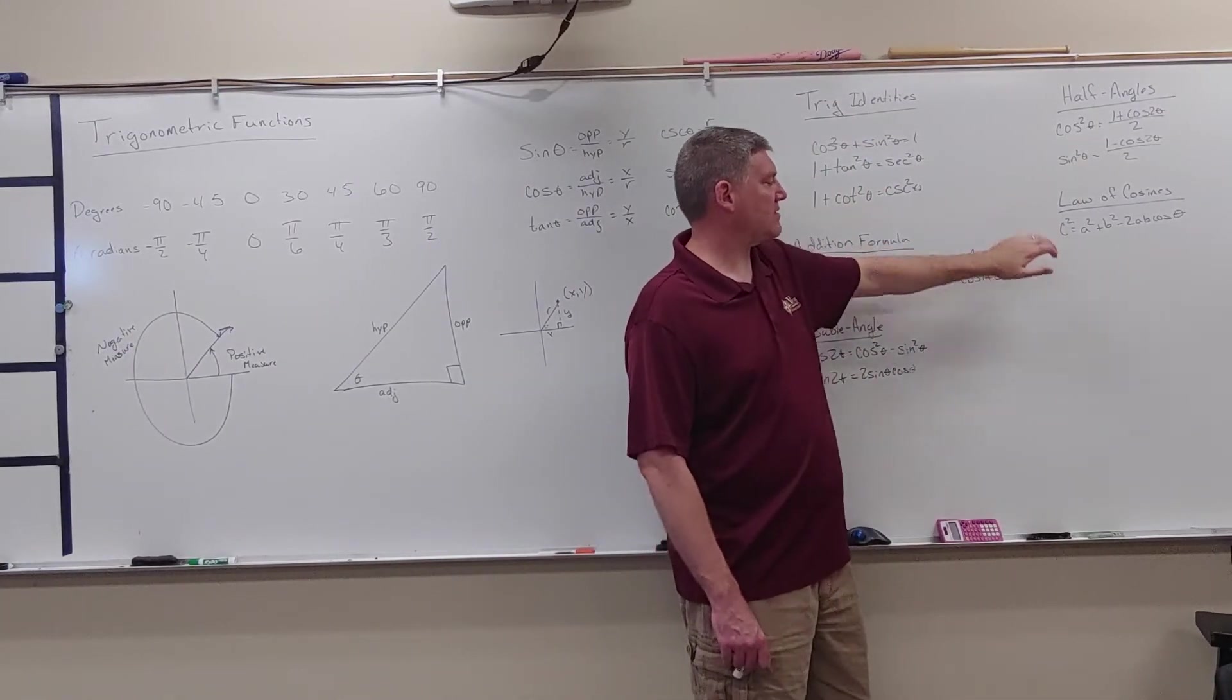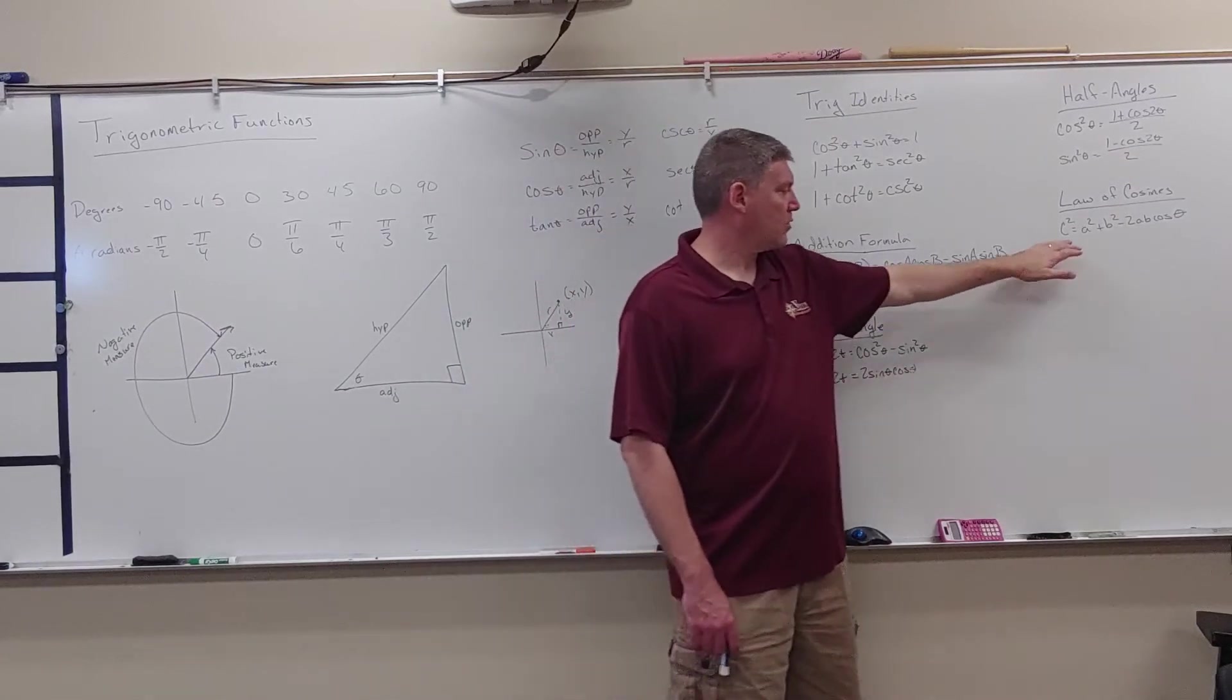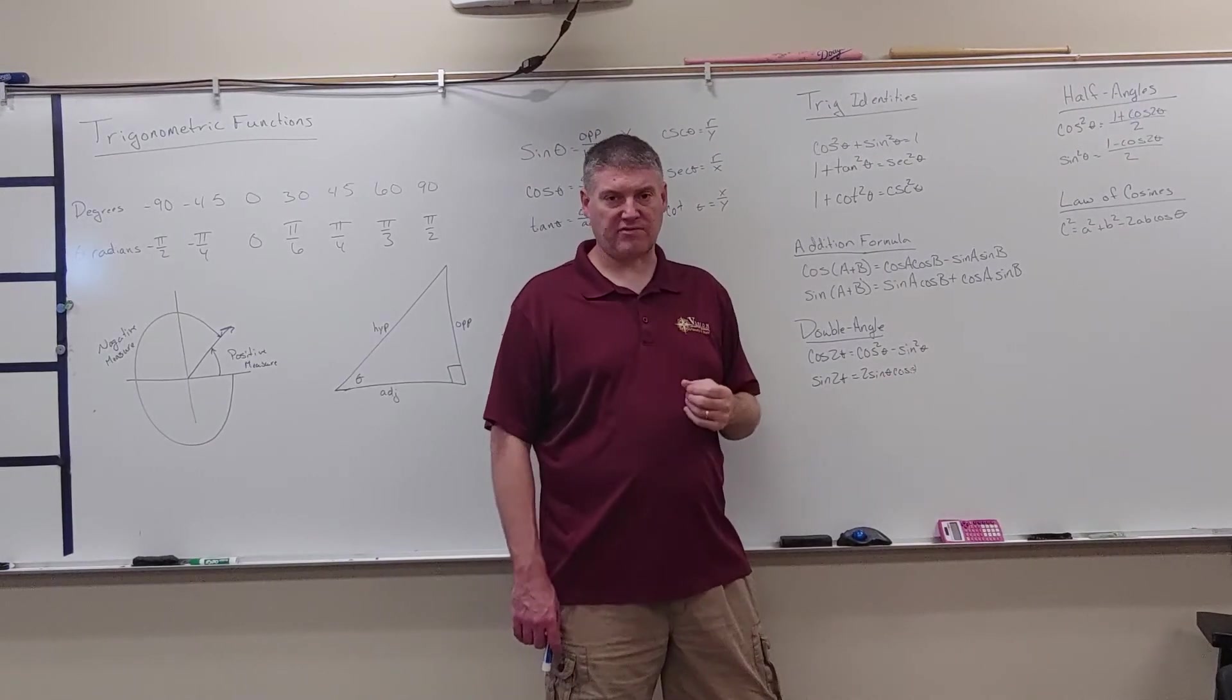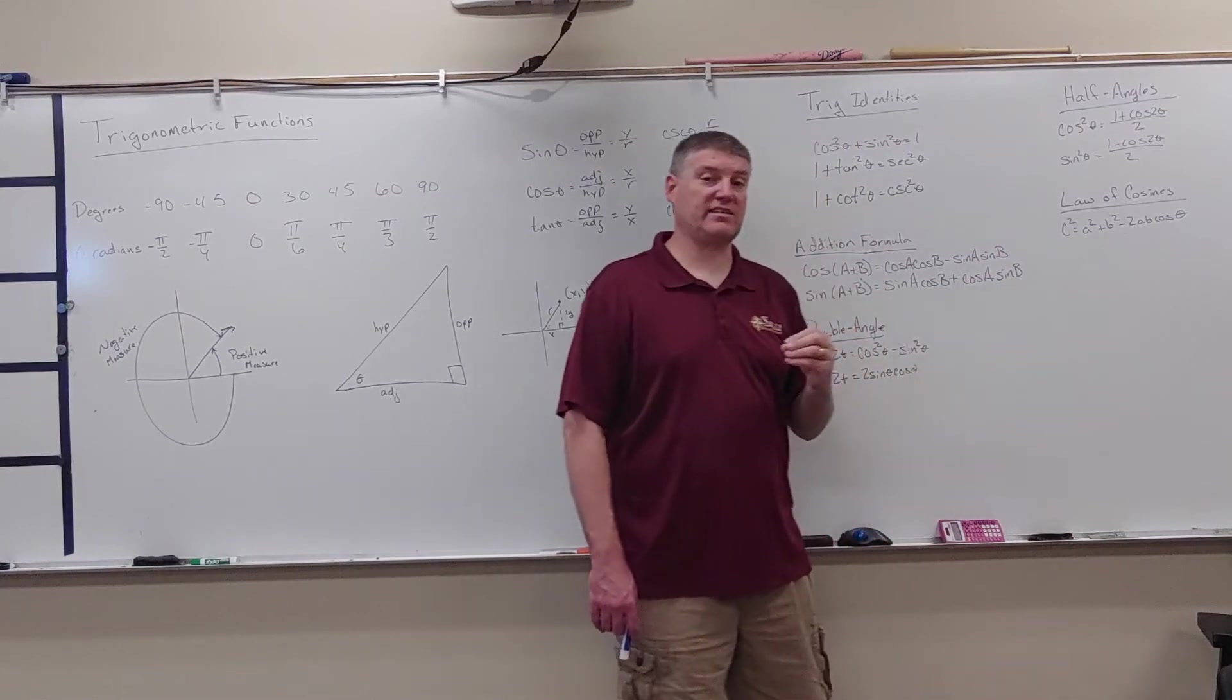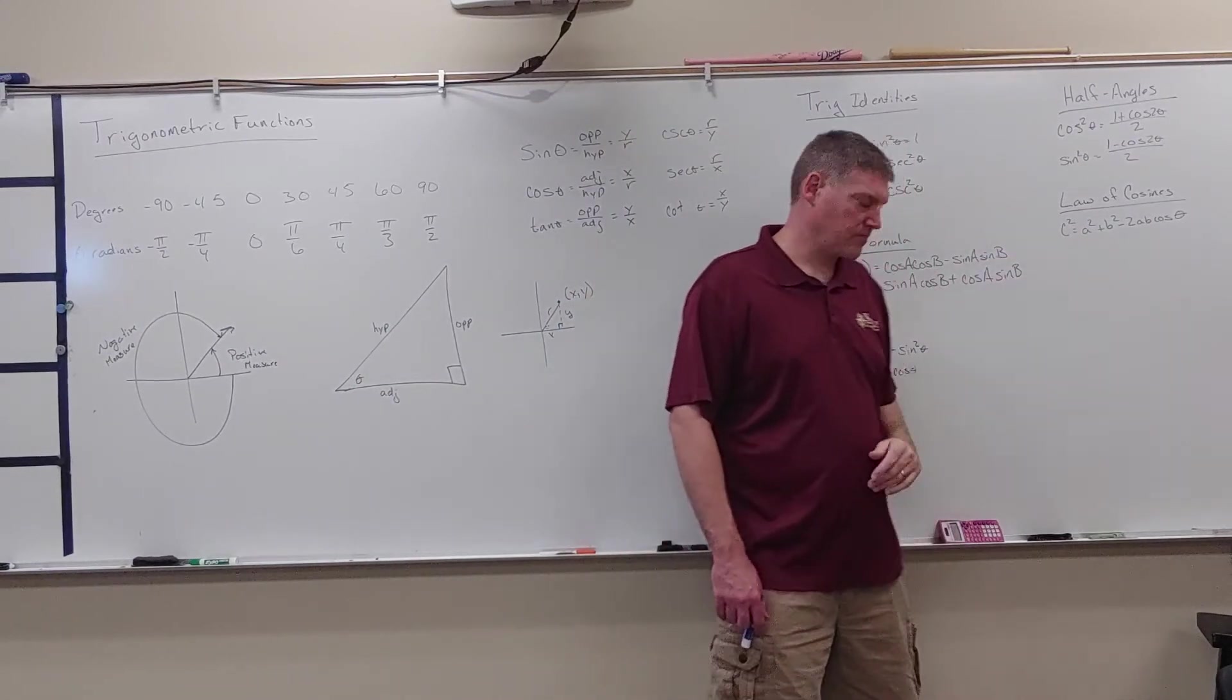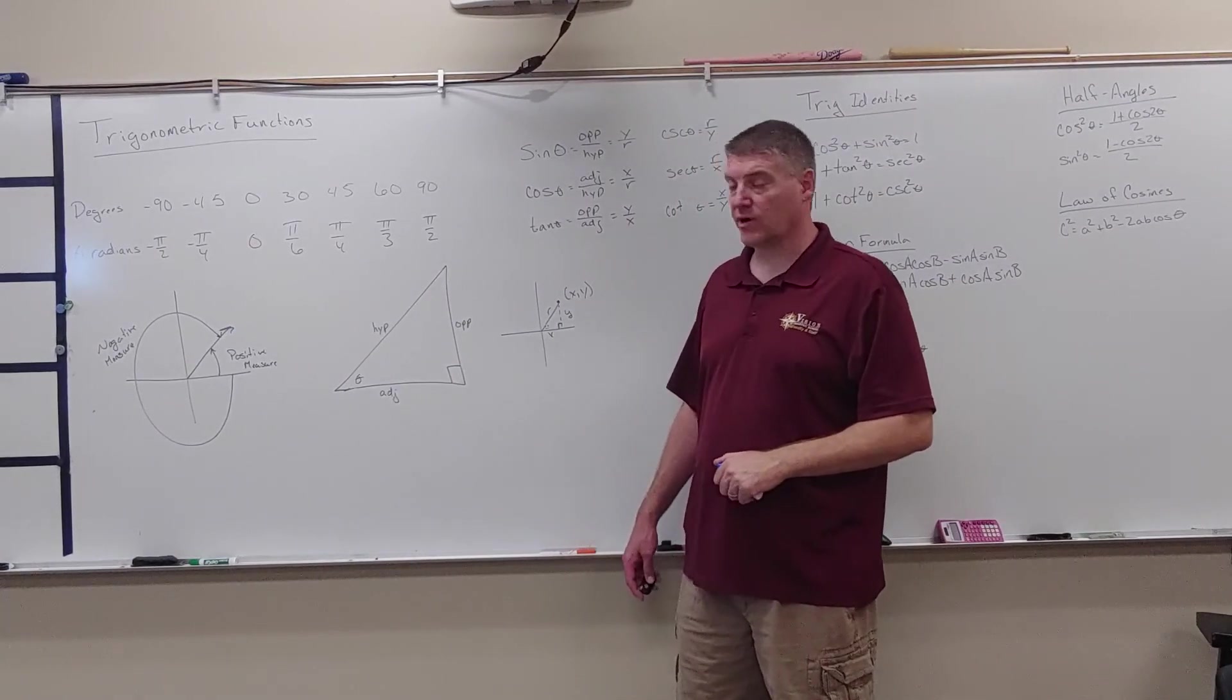And then lastly, we have our law of cosines. Law of cosines says that to find that piece, we go c squared equals a squared plus b squared minus 2ab cosine of theta, where a, b, and c are the sides of the triangle, and theta is the angle that, or c is opposite angle theta. So that's just a quick review of trig functions.